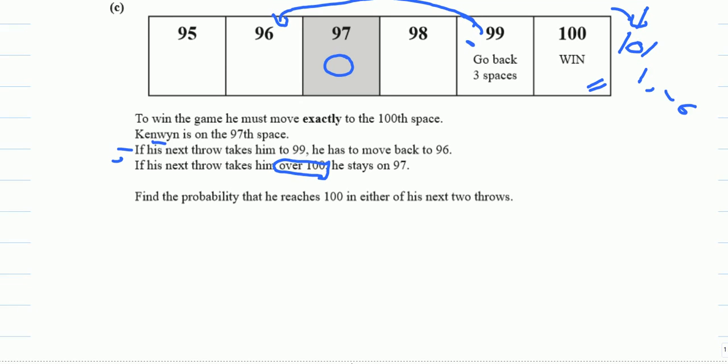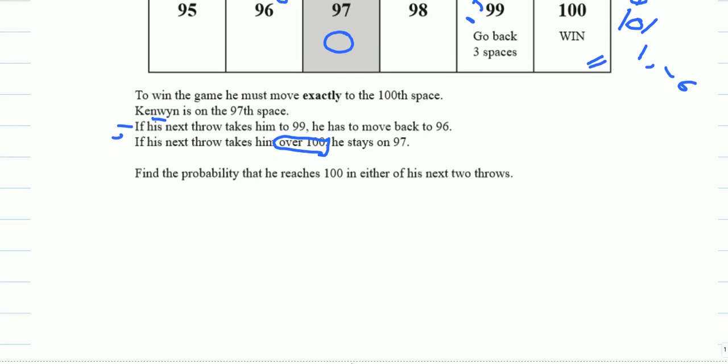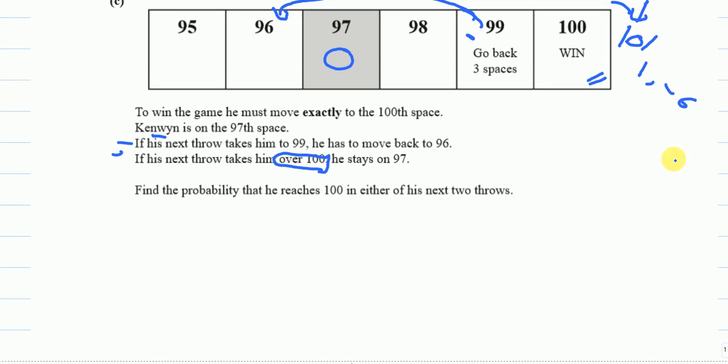So we have to find the probability that he reaches 100 in either of his next 2 throws. One of the most important things in this question was to understand the question properly, otherwise it was not easy to solve unless you really understand what they are looking for. So in either of his next 2 throws, either in 1 throw I want to win the game or in 2 throws. So let's start with the 1 throw, the easier one.